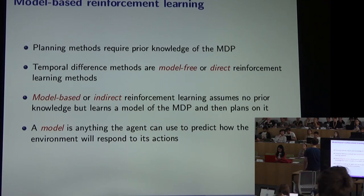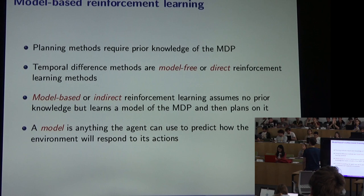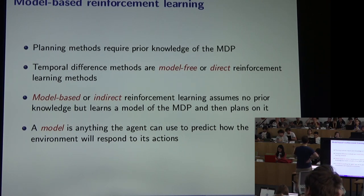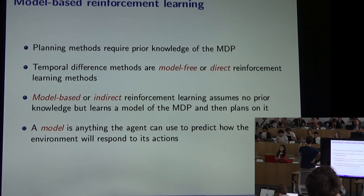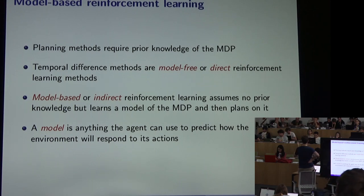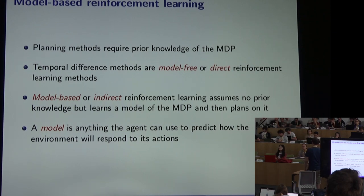A model is anything that helps the agent make predictions about what will happen in the world. There are three useful types. A full or distribution model is a complete description of the MDP — knowing the transition and reward functions exactly, so for any state-action pair you can query the full distribution over next states and true expected immediate reward. In the tabular case this has space complexity S²A. This is the best kind of model but hard to come by.